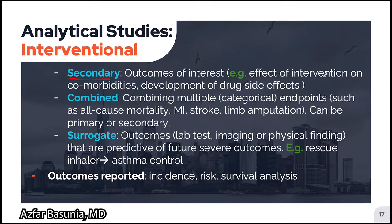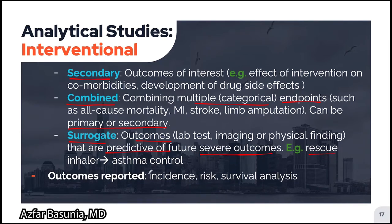Secondary endpoints are outcomes of interest from the study, such as the effect of intervention on comorbidities or the development of drug side effects. Combined endpoints are generated by combining multiple categorical endpoints such as all-cause mortality, MI, stroke, and limb amputation into a single endpoint. Combined endpoints can be both primary or secondary. Surrogate endpoints are outcomes such as a lab test, imaging, or physical finding that are predictive of future severe outcomes. For example, rescue inhaler use can be a surrogate endpoint for asthma control. Outcomes reported in clinical trials include incidence, risk, and survival analysis.